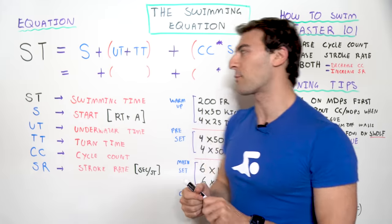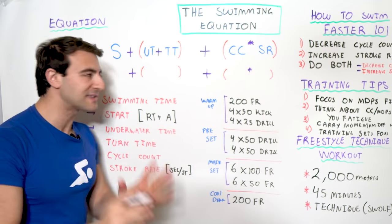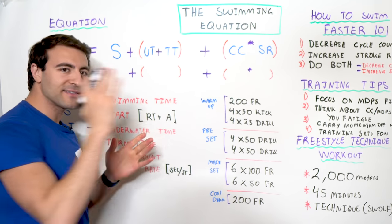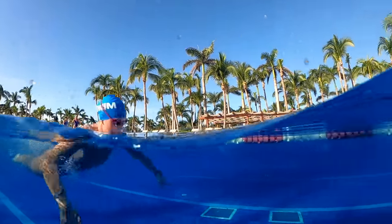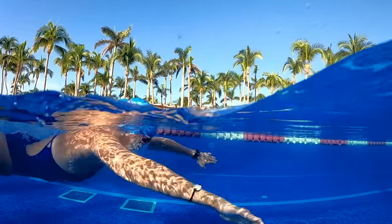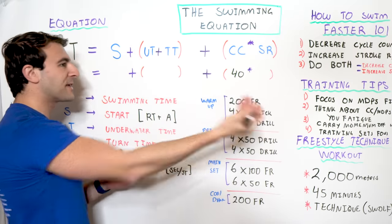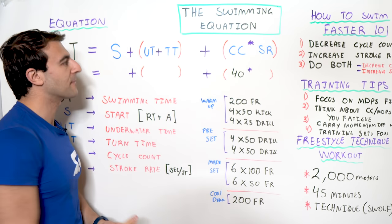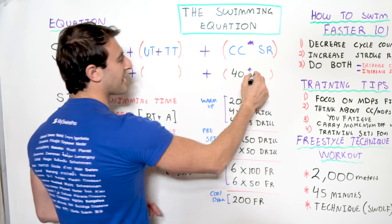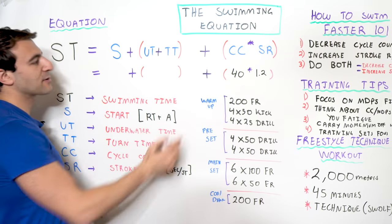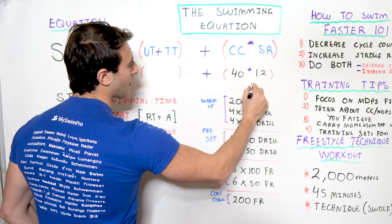Now let's go ahead and plug in some numbers and see how this works. We're going to assume we're doing a 100 breaststroke. In the 100 breaststroke, our cycle count — we're going to take 18 strokes on the way down and 22 strokes on the way back. We're using breaststroke because it's easy to understand: every time your head comes up, you take a breath, that's one cycle count. So over the course of that 100 meters, you're going to take 40 strokes — 18 on the way down, 22 on the way back. Now what is the stroke rate? Remember, our stroke rate is defined in seconds per stroke. For this example, we're going to say that's 1.2 seconds. That's our stroke rate, our tempo. So we multiply that out and that gives us 48.